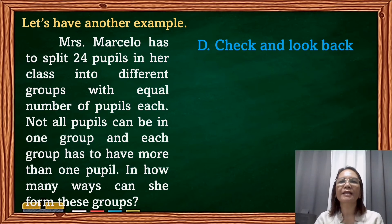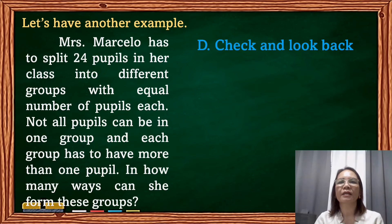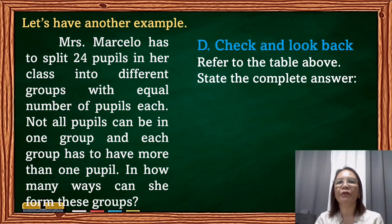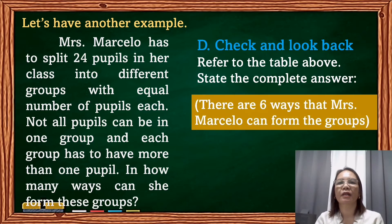The last step according to Polya is check and look back. Based on our problem, we refer to the table above and state the complete answer: there are 6 ways that Mrs. Marcelo can form the groups.